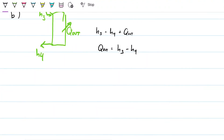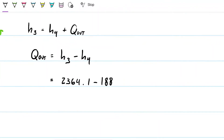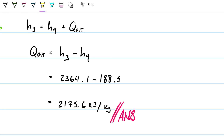State 4 is at 15 kPa with enthalpy h4 = 188.5 kJ/kg (already given). Therefore Q_out = 2364.1 − 188.5 = 2175.6 kJ/kg. This is heat leaving the condenser. Whether you find this by assuming a direction for Q and solving, or by setting it up as Q_out directly, a positive result confirms heat is indeed leaving the system.